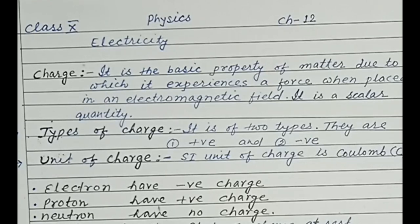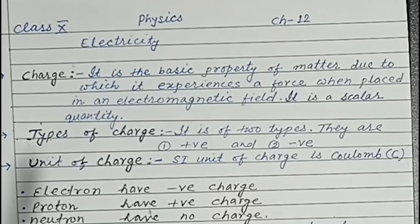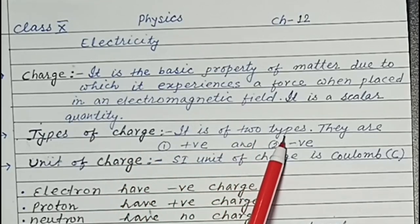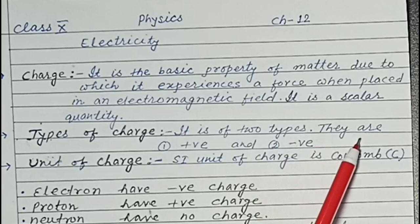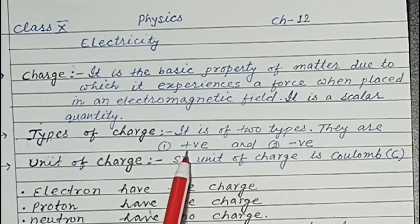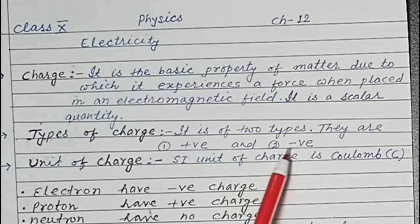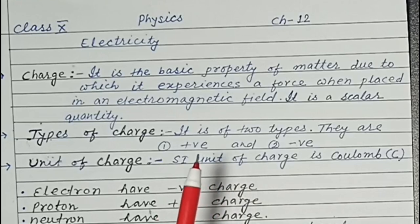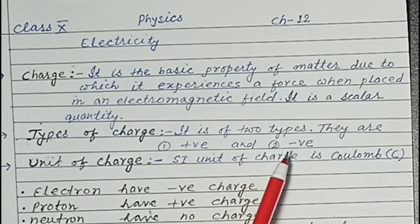Next topic is Types of Charge. It is of two types. They are positive charge and negative charge. Children, charges are of two types. Due to loss of electron, positive charge and due to gain of electron, negative charge.